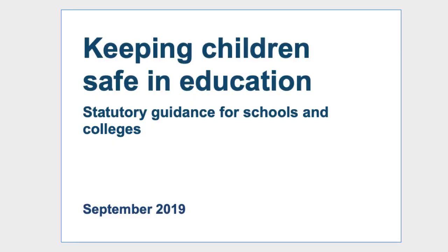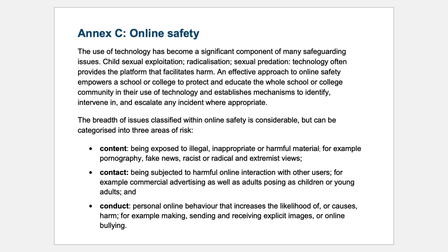Schools' procedures are in line with the DfE's statutory guidance — I'm sure those involved in safeguarding will be familiar with it. There is an ever-growing annex in this document, I think it's on page 96 in the 2019 document, around online safety. Your organisation should take a look at these and understand the requirements and procedures that schools are having to deal with. A helpful way of thinking about online safety used by the DfE and Ofsted is called the Three C's.